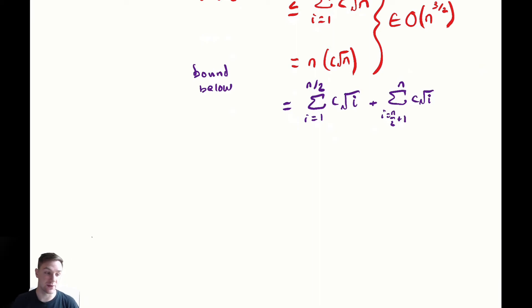Some of the time we might need to be careful here because n might not be even so n over two might not make sense for a top or bottom bound of the summation but we're just going to ignore that because it's not going to really affect anything.